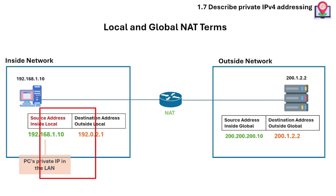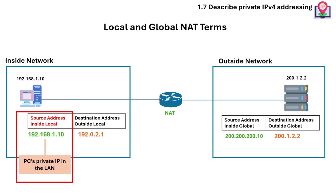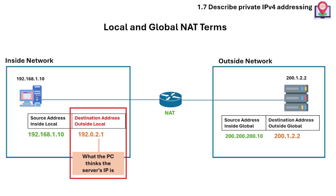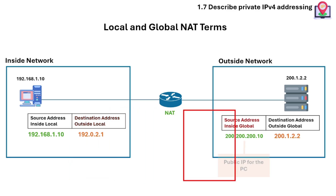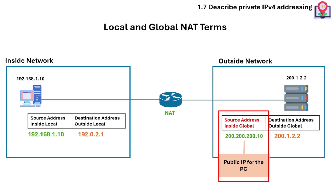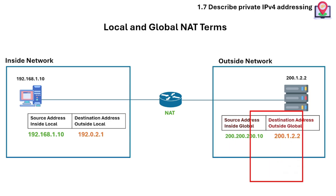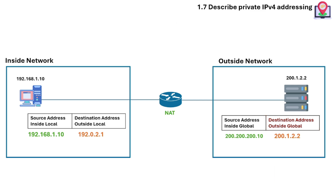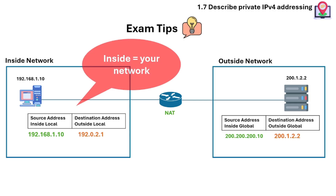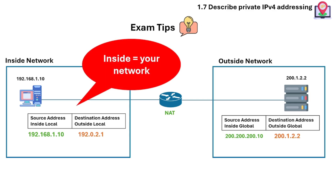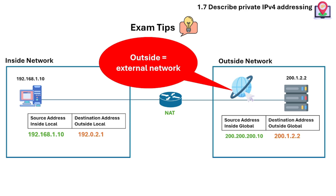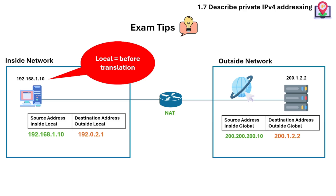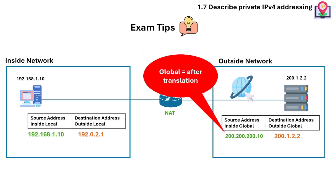To summarize these terms: inside local is the computer's private IP in the LAN. Outside local is what the computer thinks the server's IP is. Inside global is the NAT-assigned public IP for that computer. Outside global is the actual public IP address of the external server. For exam tips: when you see the term 'inside,' it means your network. 'Outside' means the external network, usually the internet. 'Local' means before translation. 'Global' means after translation, or what others see.